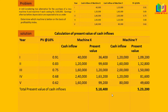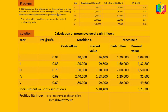The formula to calculate the profitability index is: total present value of cash inflows divided by initial investment. The initial investment is rupees 4 lakh for both machines. For Machine X: 5,18,400 divided by 4,00,000 gives a profitability index of 1.296.